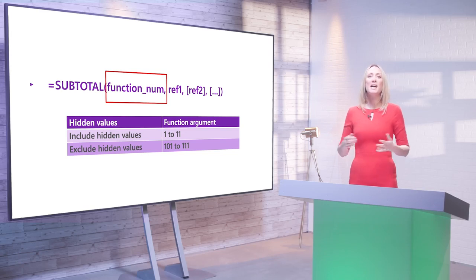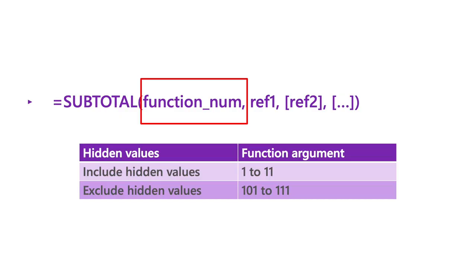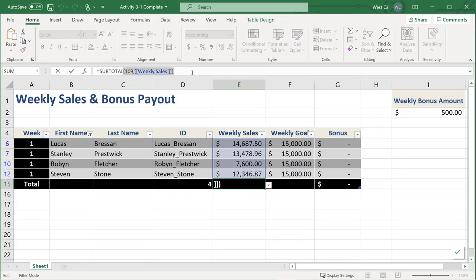Now that you have seen how the SUBTOTAL function is used in the total row, let's cover some more detail on its syntax and arguments. You use the function_num argument to define which functions you would like to use to calculate subtotals. Functions are called using numeric values of 1 to 11 when including hidden values, and 101 to 111 when excluding them. The SUBTOTAL function is put in automatically in a table because it works well with filters, and it's also a function you can use anywhere else in the worksheet.